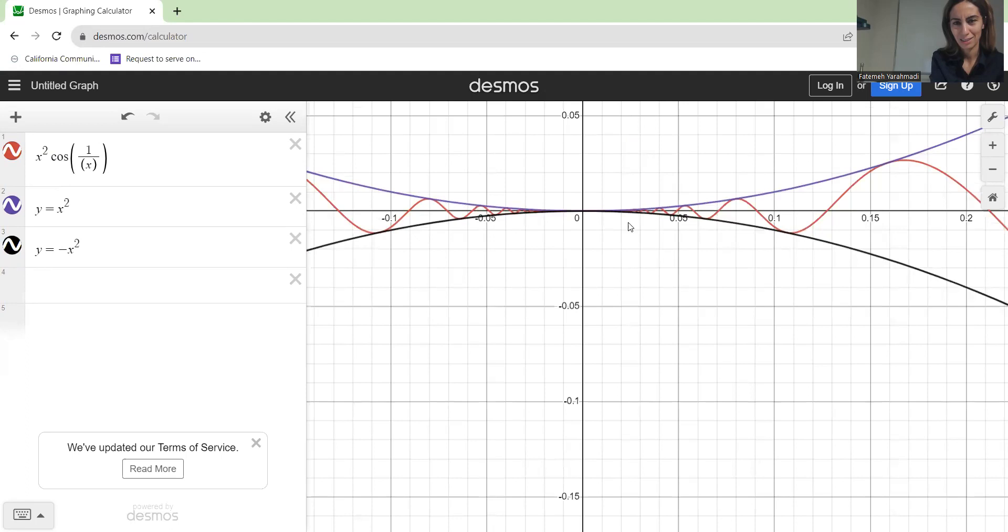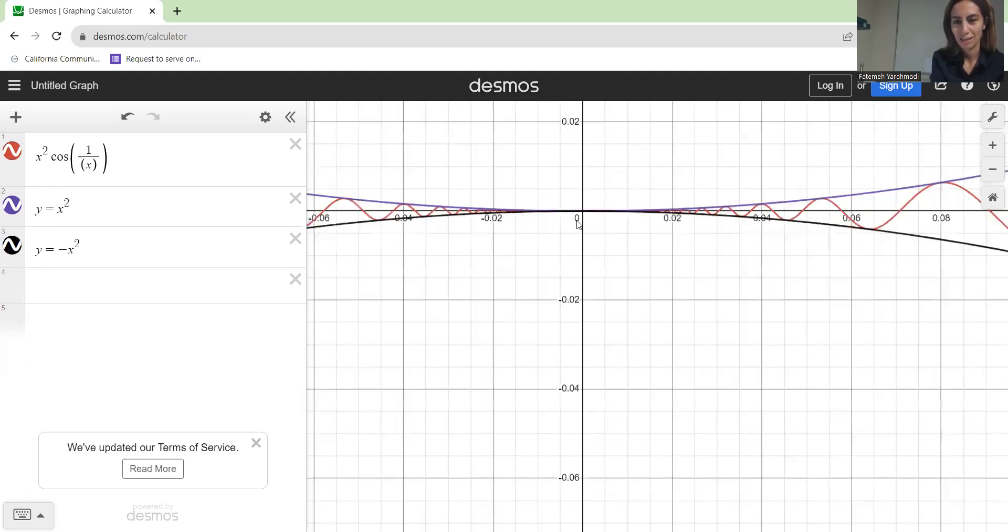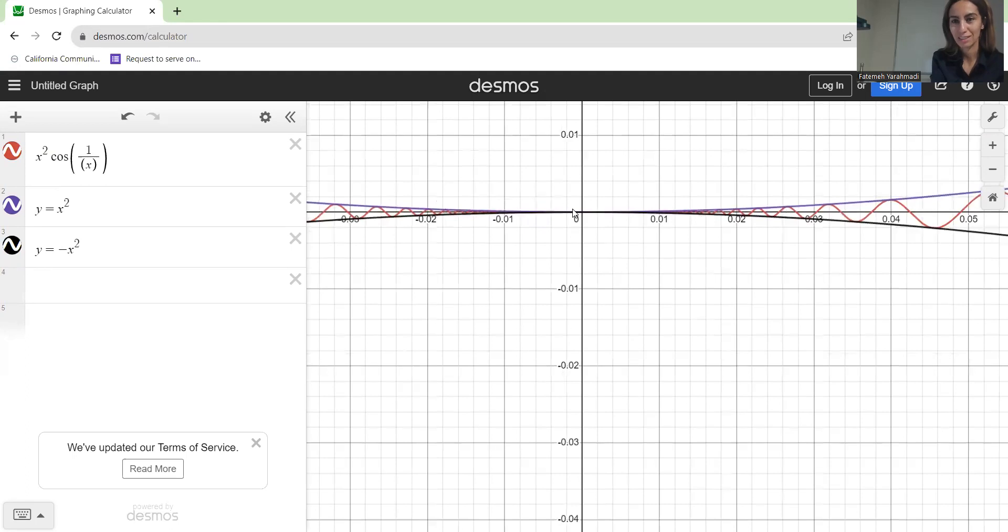Basically around 0, this complicated function, which is x squared cosine of 1 over x, is bounded by these two quadratic functions. And as you can see, the limit must be 0.